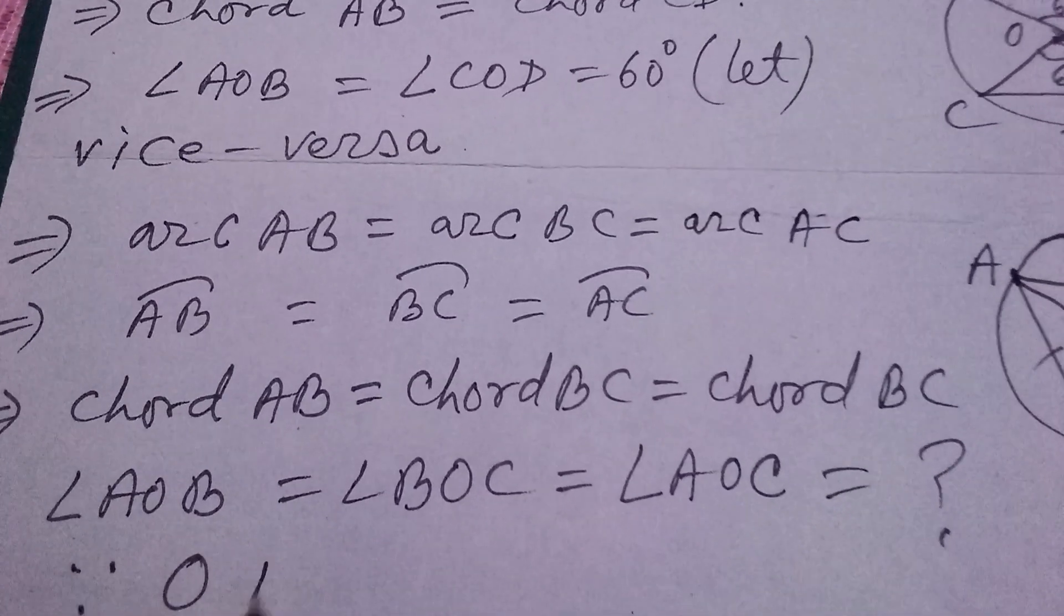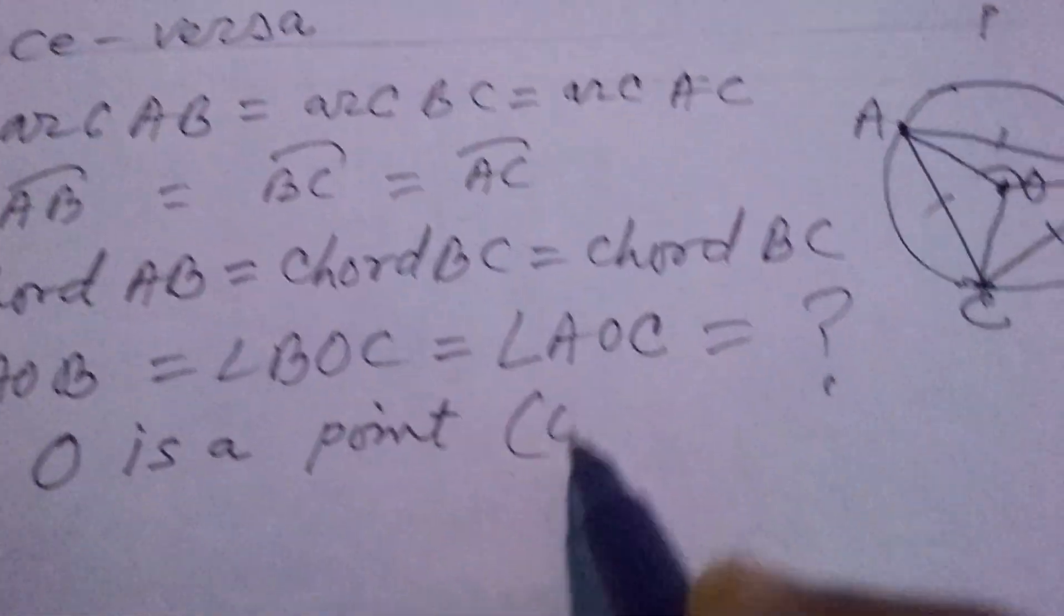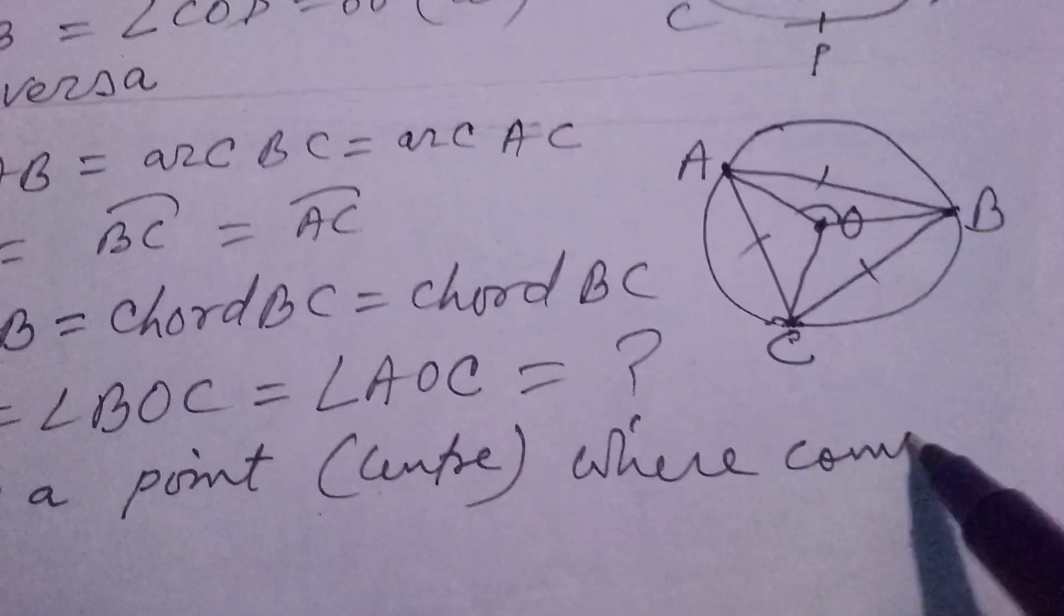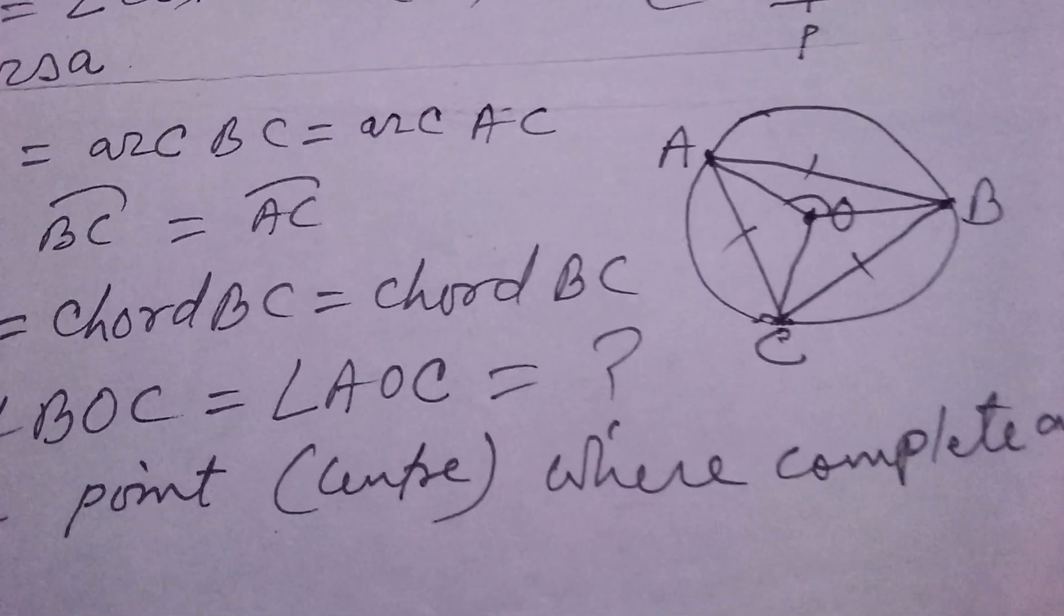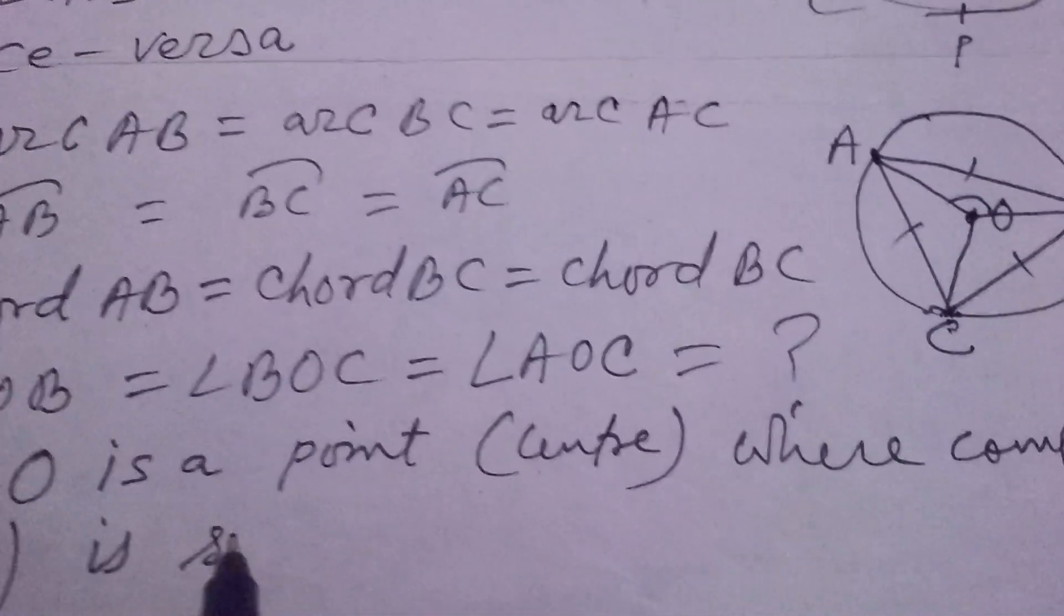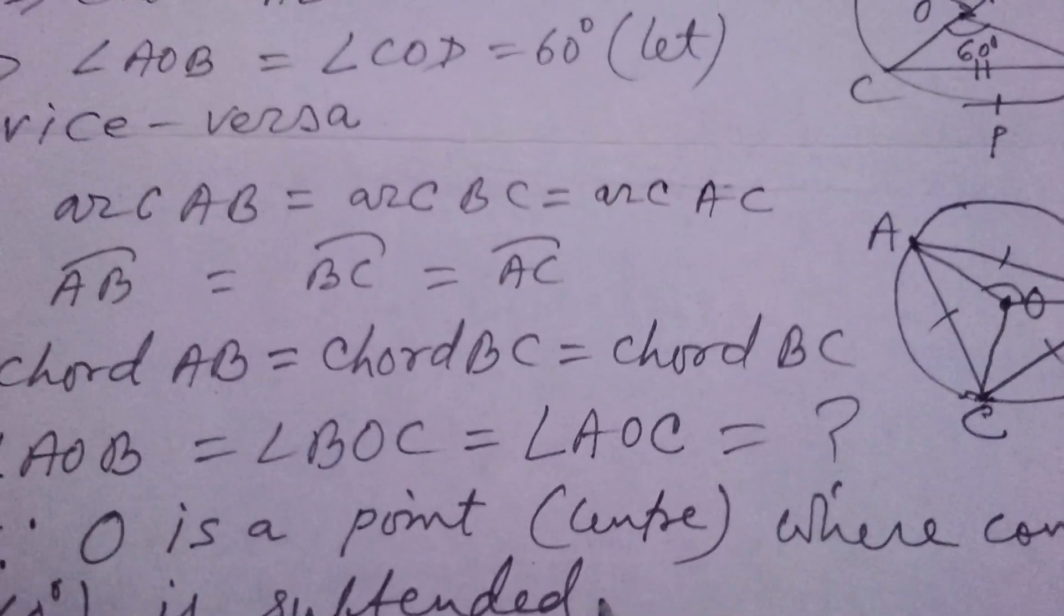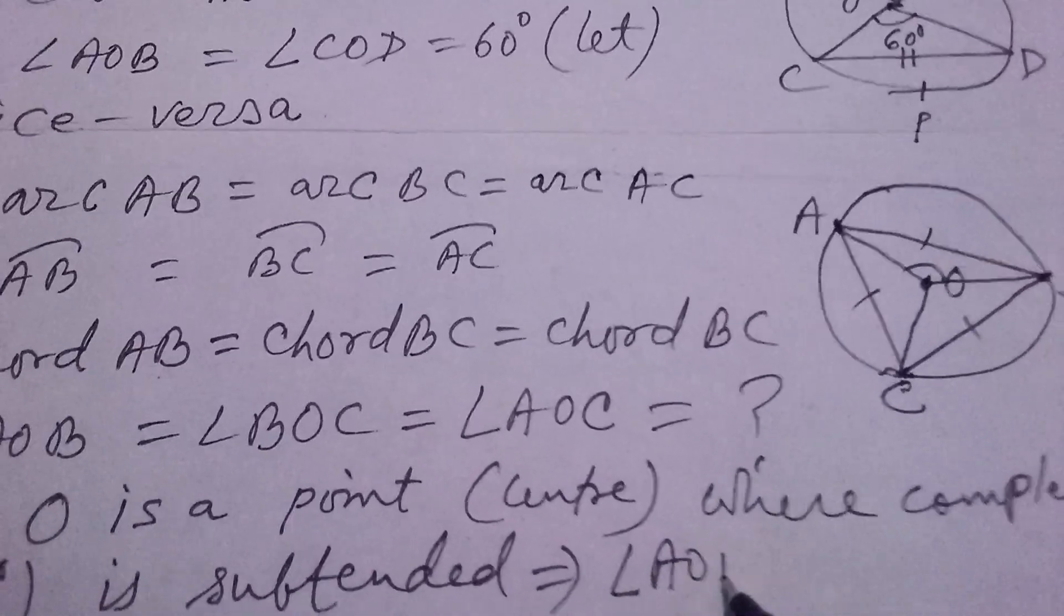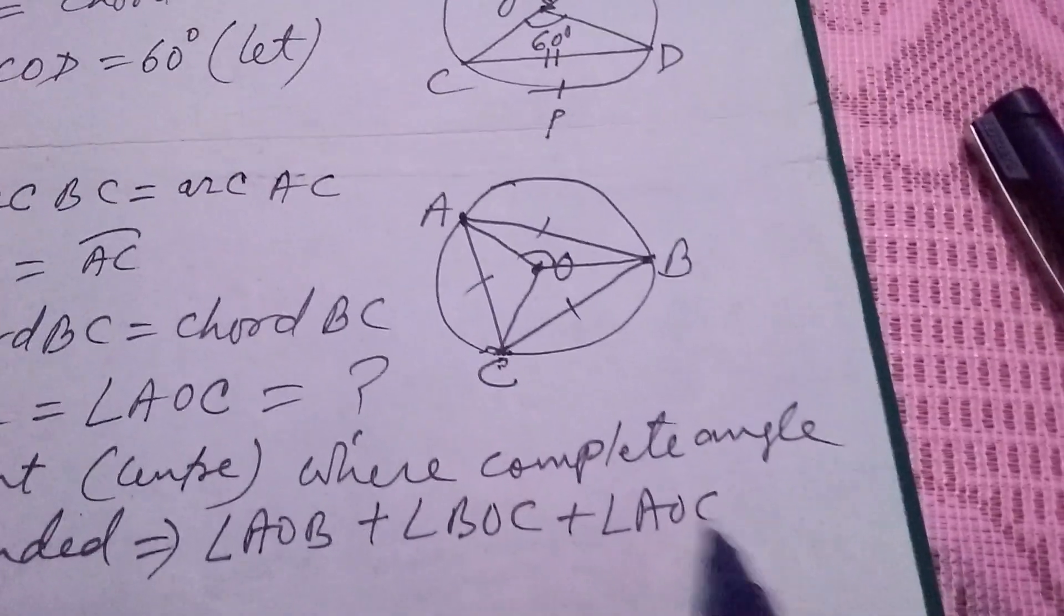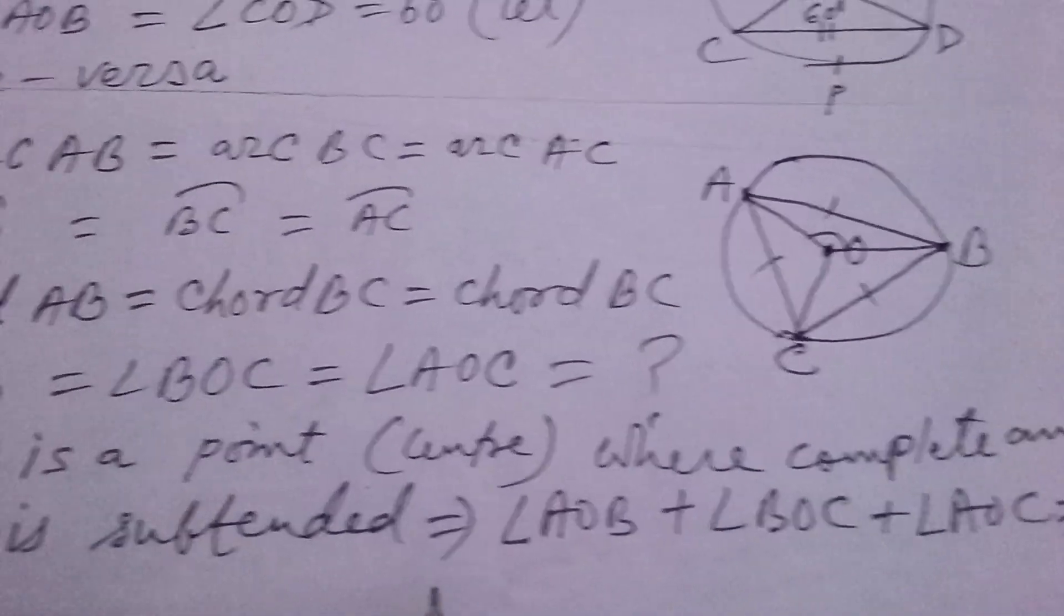You know that, since O is a point, here it is center, where complete angle is made. Complete angle, that means, 360 degrees, is subtended. This implies that angle AOB, plus angle BOC, plus angle AOC, equals to 360 degrees. Complete angle is always 360 degrees.